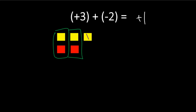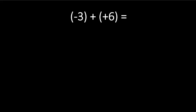Let's do another example. We have negative 3 plus positive 6. Negative 3 means we have 3 red tiles, so let's draw 3 red tiles. Positive 6 means we have 6 yellow tiles, so let's draw 6 yellow tiles.